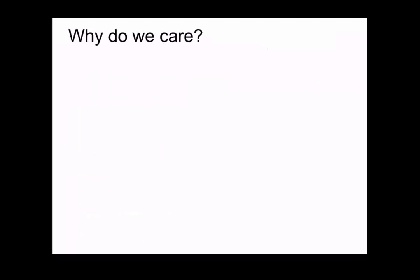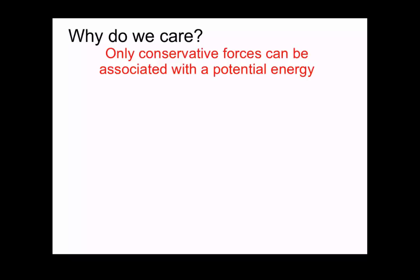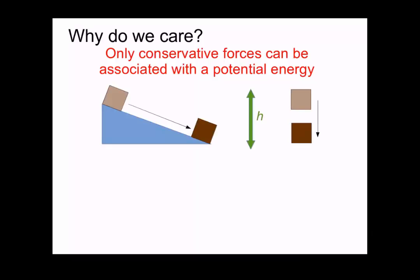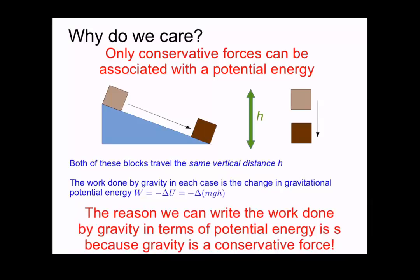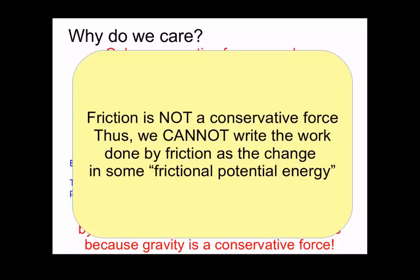Why do we care about this distinction between conservative and non-conservative forces? Because only conservative forces are associated with a potential energy. To explore this idea, let's consider a block sliding down a frictionless ramp and a block just falling to the ground. Both blocks travel the same vertical distance h. In both cases, the work done by gravity equals the change in gravitational potential energy, written mathematically as negative delta U, or negative delta of mgh. The reason we can write the work done by gravity in terms of a potential energy is because gravity is a conservative force. Friction is not a conservative force, so we cannot write the work done by friction as the change in some type of frictional potential energy.